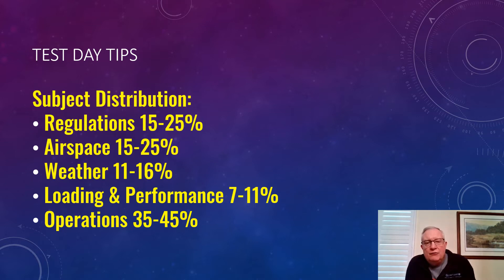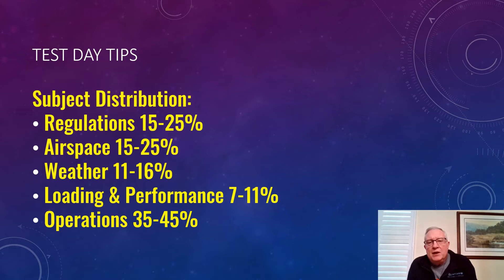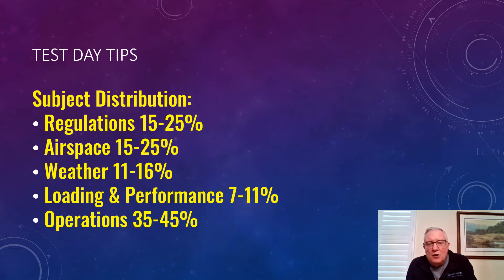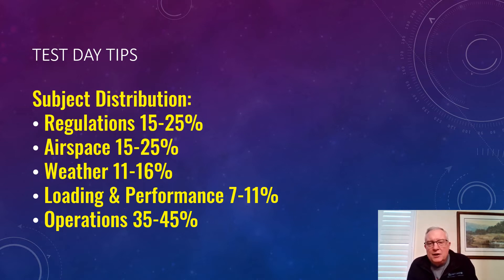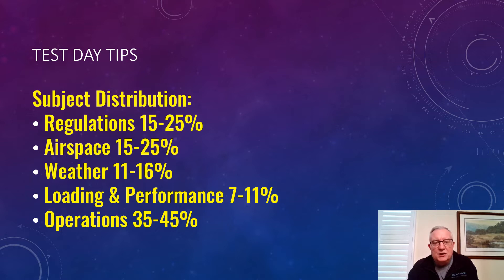The subject distribution: FAA regulations and legal rules make up about one-fourth of the test. Questions about airspace — which airspace is which — are another quarter. Weather is worth points even though it's not heavily weighted. Loading and performance was where I missed things. And then operations around airports is the bulk of it — that's where I really recommend finding good resources.